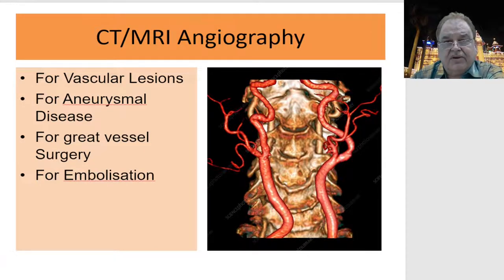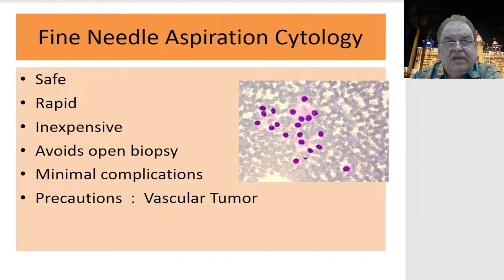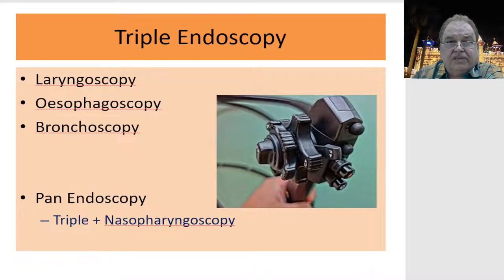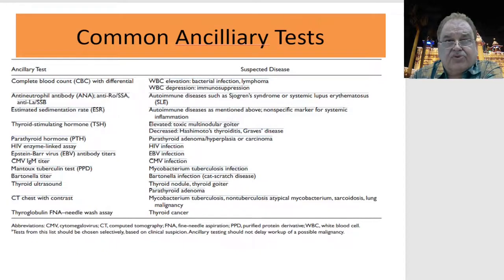For vascular cases, if there is aneurysmal disease or great vessel surgery or embolization is planned, angiography is done. Fine needle aspiration cytology (FNAC), after ruling out a vascular tumor, is a safe, rapid, and inexpensive method of reaching a diagnosis. Triple endoscopy includes laryngoscopy, esophagoscopy, and bronchoscopy; sometimes nasopharyngoscopy is added, making it a pan-endoscopy.